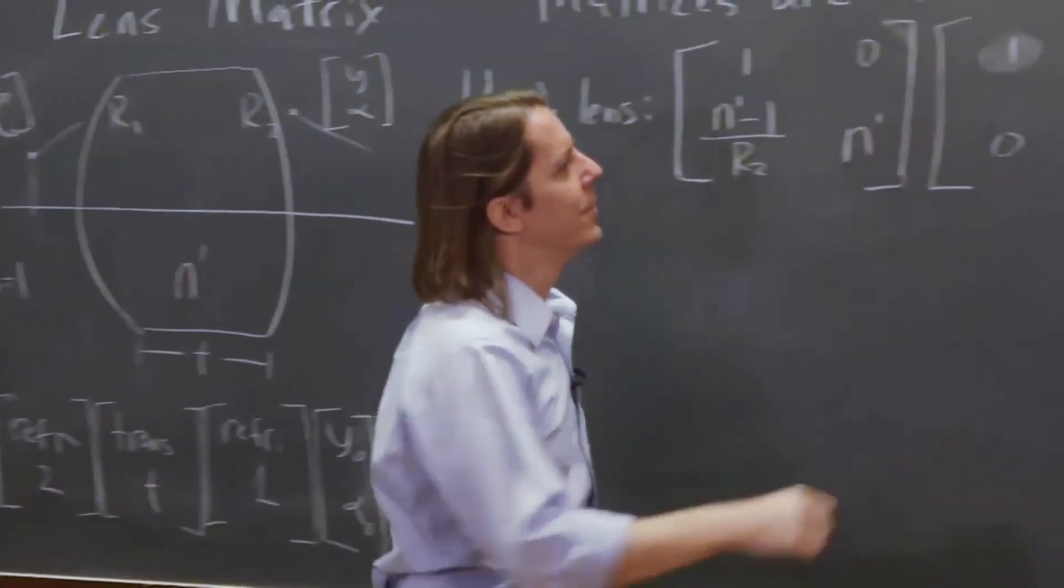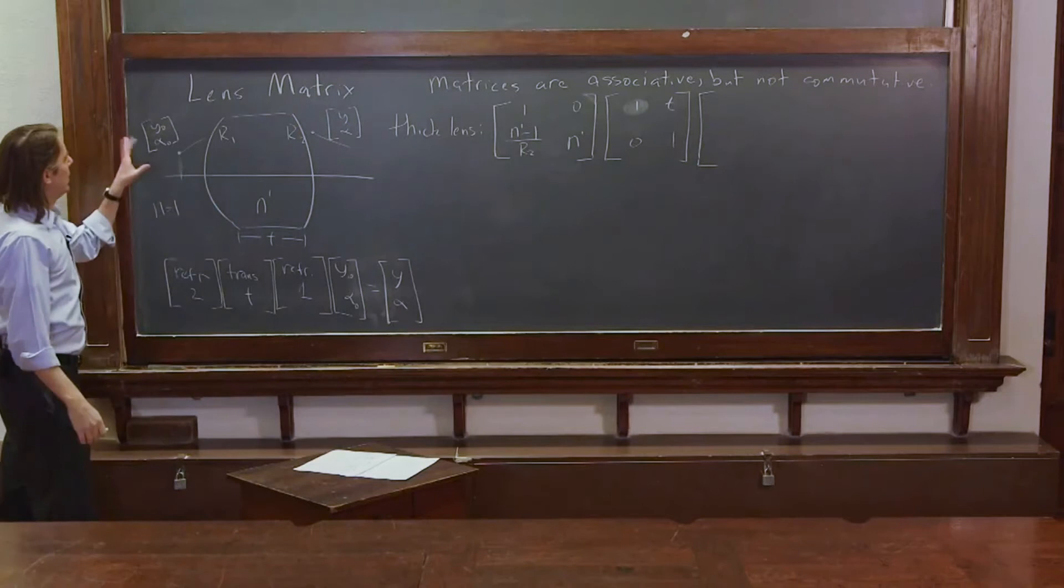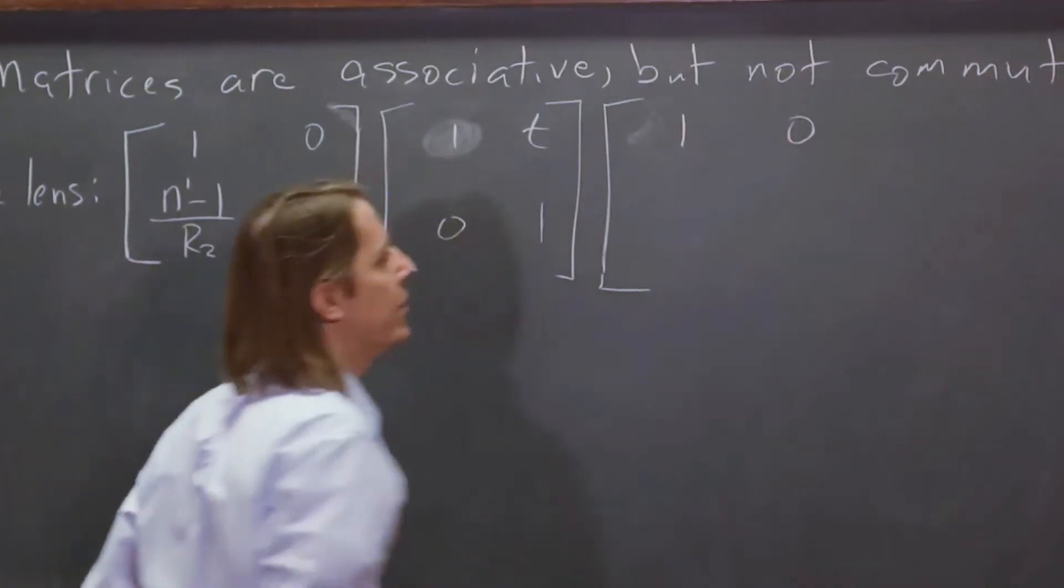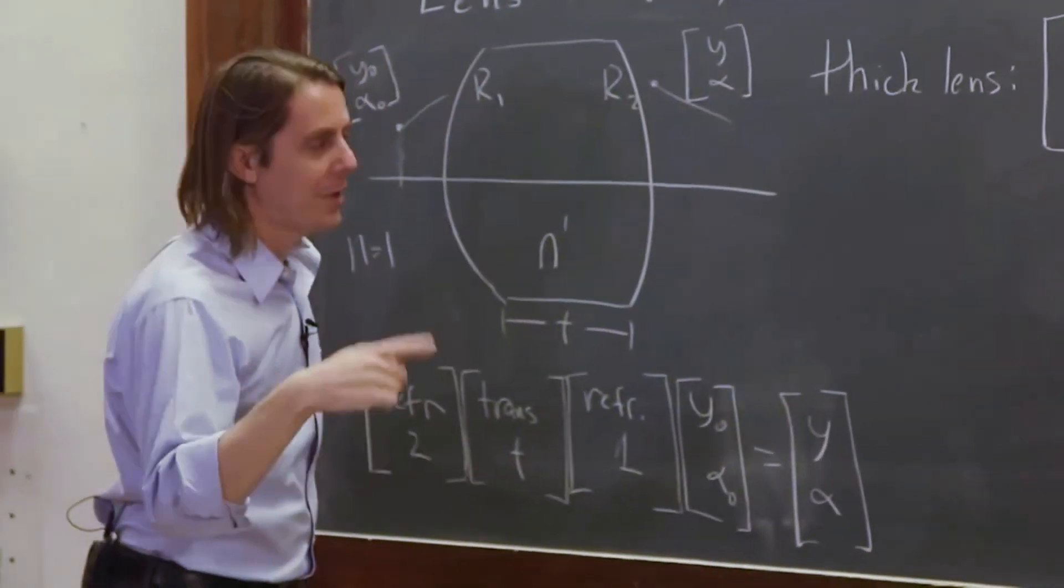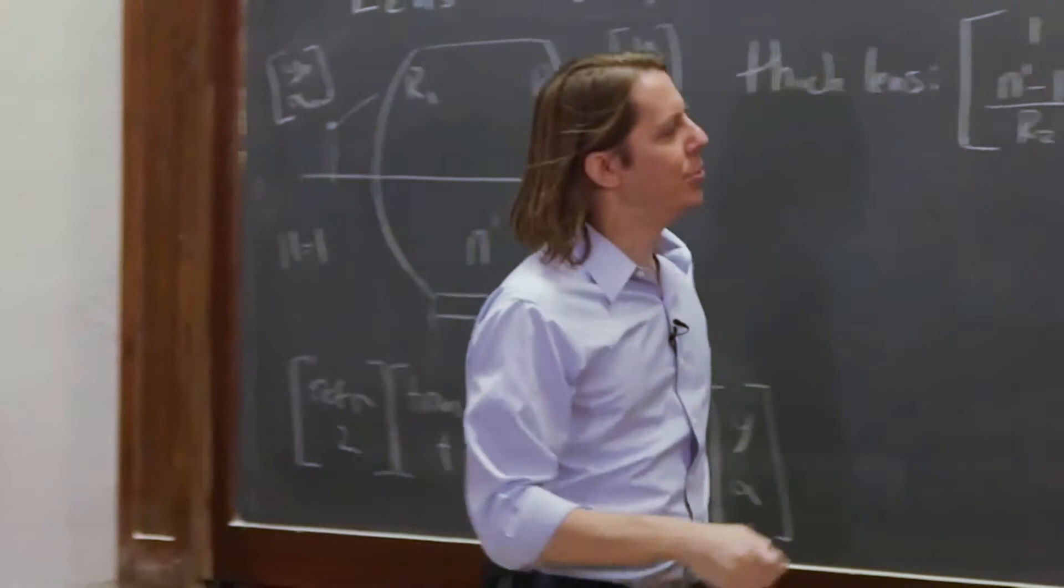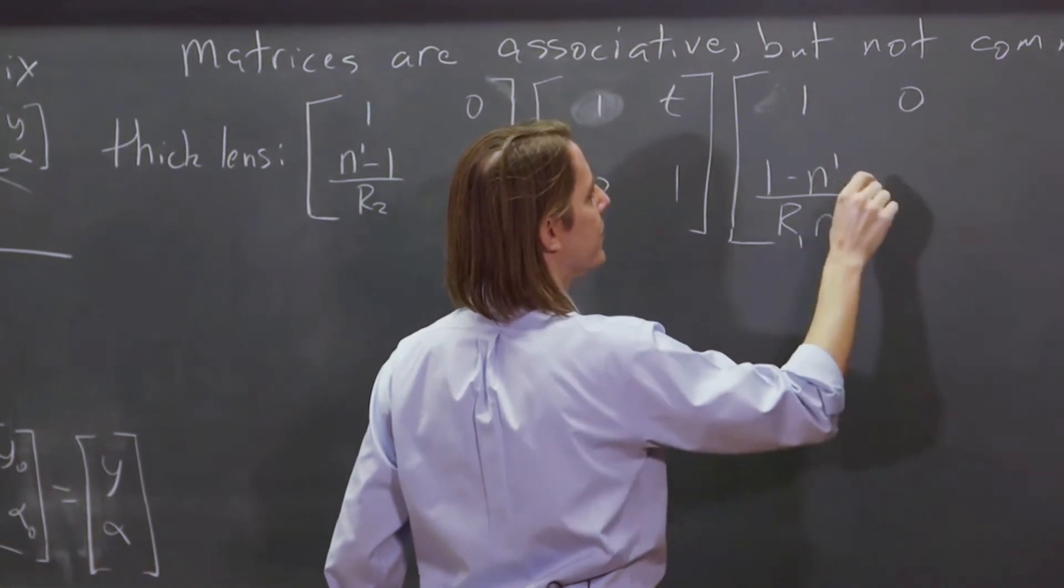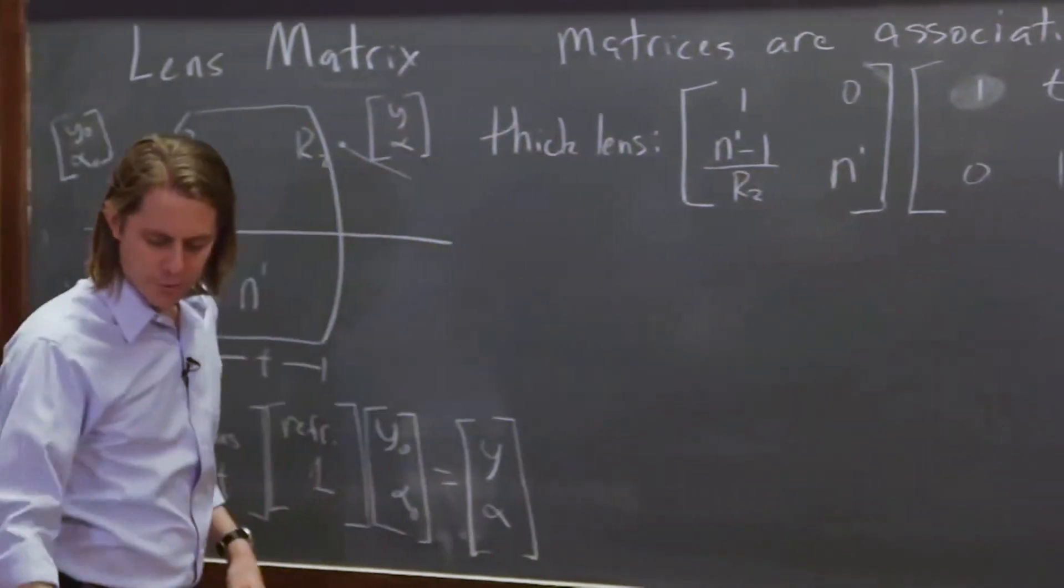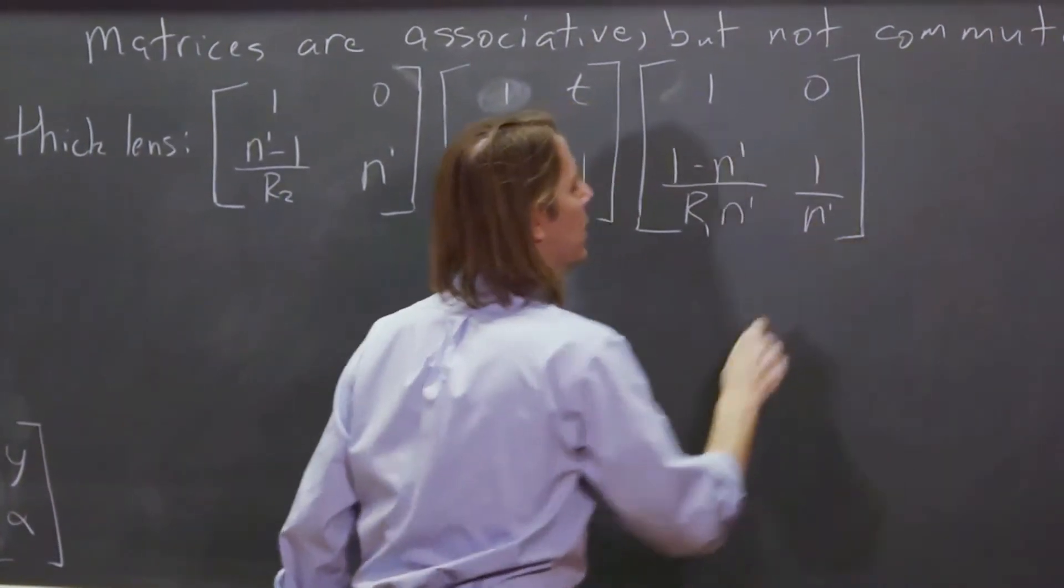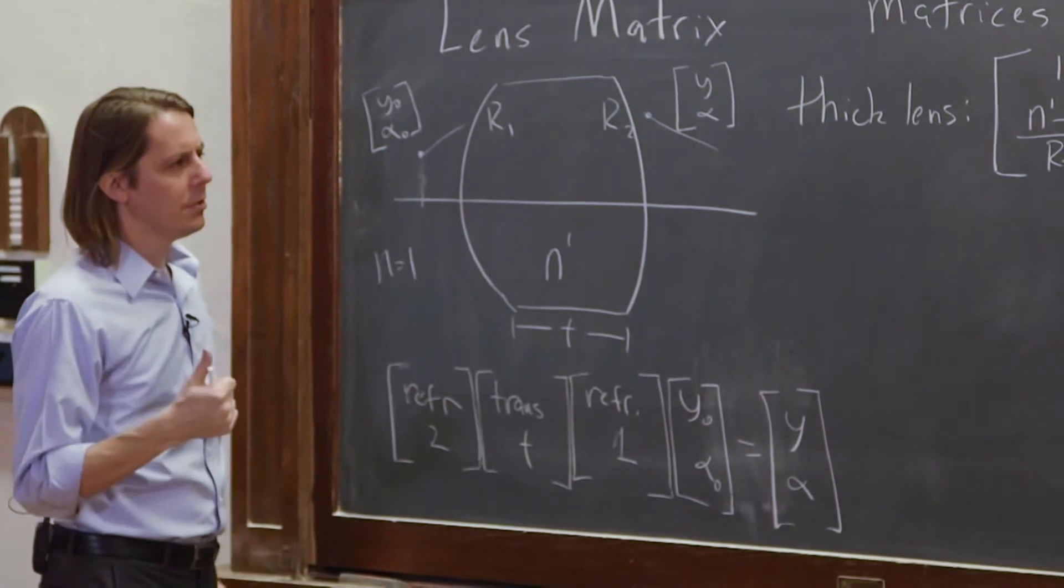And then we've got to do the first refraction, which might have made some more sense to do first. But for some reason, I decided to do it last. So we're going to refract at this interface. So it's going to be 1 here and 0 here. Now let's think back to the refraction matrix. It's n minus n prime over r n prime. And now all the n's and n primes are the same. So we put n 1 minus n prime over r1 n prime. And then this term was n over n prime. n is 1, so it's 1 over n prime. All the n's that show up are n prime because I left all the n's here equal to 1. That's correct.